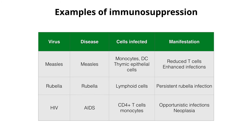Other examples of immunosuppression: measles infects monocytes, dendritic cells, and thymic epithelial cells. Rubella virus is also immunosuppressive. And of course HIV — which we will dedicate a lecture to — is a major immunosuppressor. It infects CD4-positive T cells and destroys them, so you have no helper T cells to make cytokines, antibodies, or CTLs. That's why HIV immunosuppresses: you get all sorts of opportunistic infections — viral, bacterial, and fungal — and you get cancer as well because your immune system cannot perform cancer surveillance.